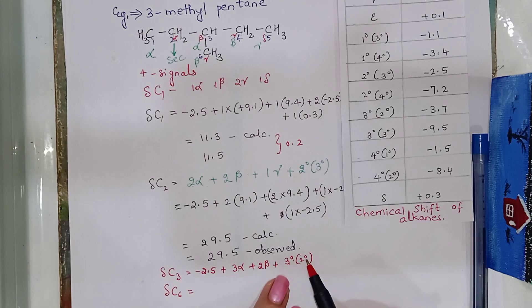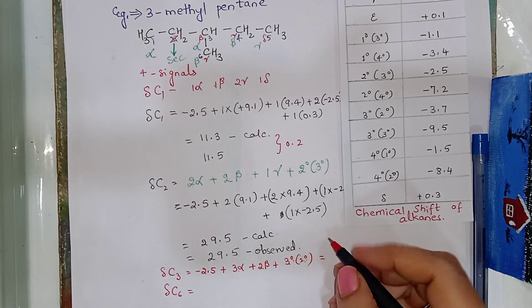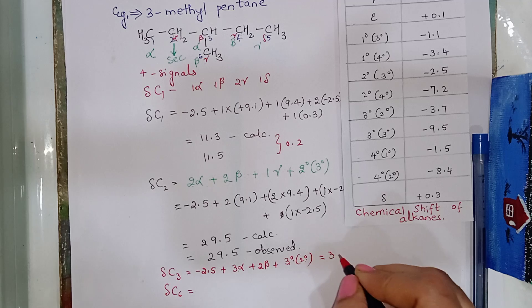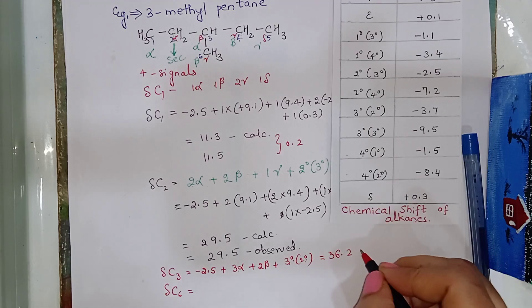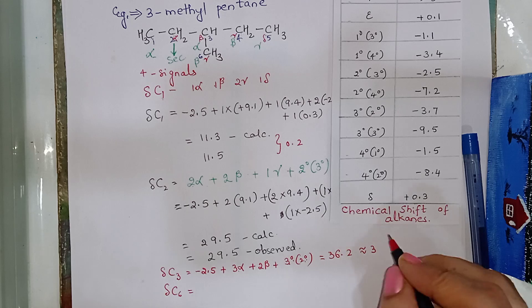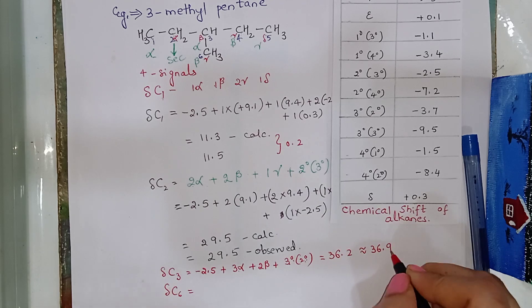And, 3 degree carbon attached to secondary carbon. Add this. On addition, we find that the calculated value is 36.2 which is very much near the observed value that is 36.9.